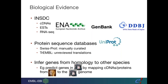The data for automatic annotation comes from the INSDC — the International Nucleotide Sequence Database Consortium — which includes ENA, GenBank, and DDBJ. We use cDNAs, expressed sequence tags, and RNA-seq data from these sources, plus protein database data from UniProt, including both SwissProt manually curated proteins and TrEMBL unreviewed translations. For species where species-specific data is scarce, we use homology — for example, predicting chimp genes by mapping human proteins and cDNAs onto the chimp genome.